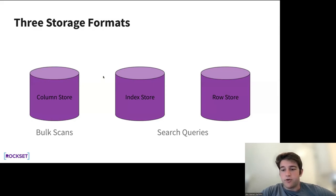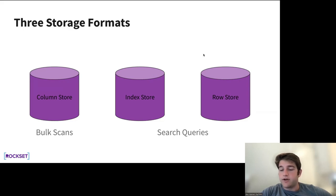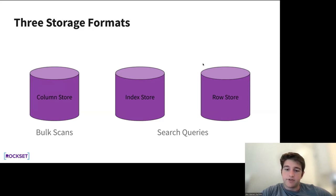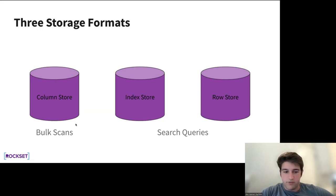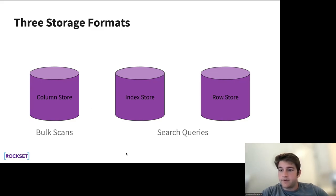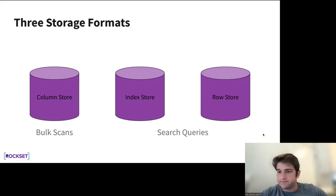Rockset has three storage formats. The index store — the inverted index and range indexes — produces doc IDs that we look up in the row store to retrieve the rest of the document. The row store contains all fields of the document. The column store is a columnar format for fast bulk scans, with traditional columnar advantages: good compression and good throughput when you only need a subset of columns. All three of these stores are backed by RocksDB as the underlying storage engine.